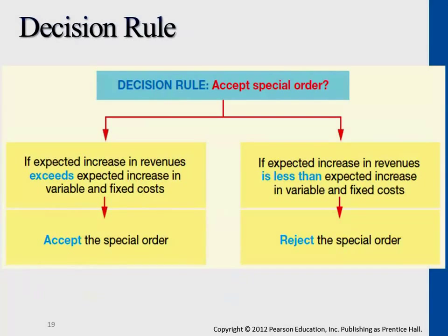The main decision rule here again is revenue compared against cost. The general theme for each and every question is that we're doing a cost-benefit analysis. If the output is profit, then we can accept the order; otherwise, we reject the special order. Even though the quantity may be very appealing, if at the end we're not getting profit, there's no point in fulfilling this requirement.